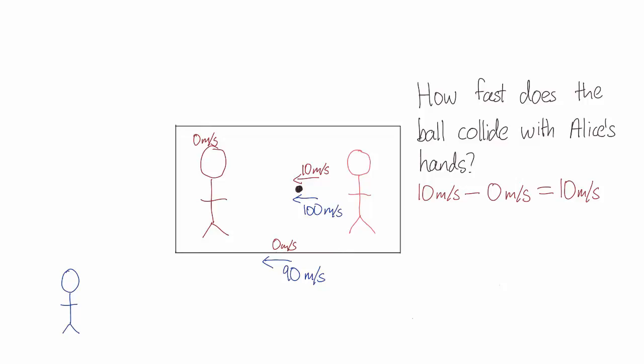Alice is standing on the train, and the train is moving at 90 meters per second. So Bob will see Alice as moving at 90 meters per second. So finally let's ask, how fast does Bob see the ball collide with Alice's hands?